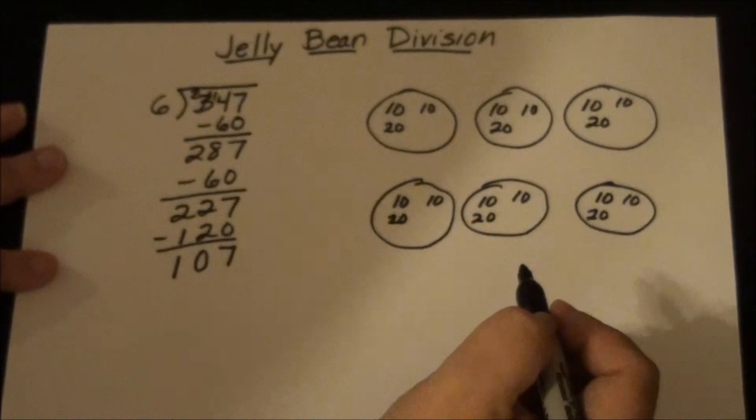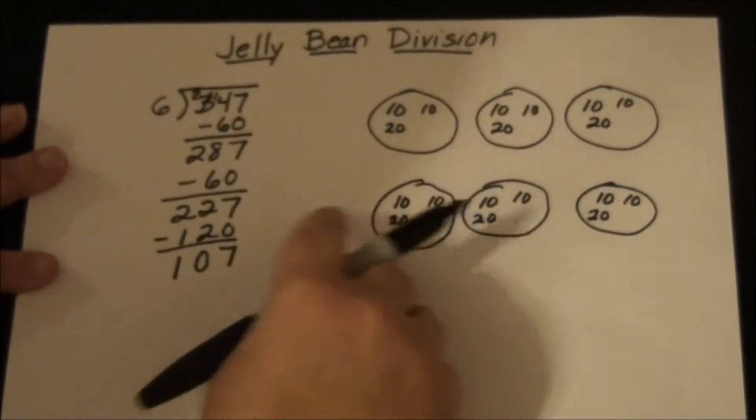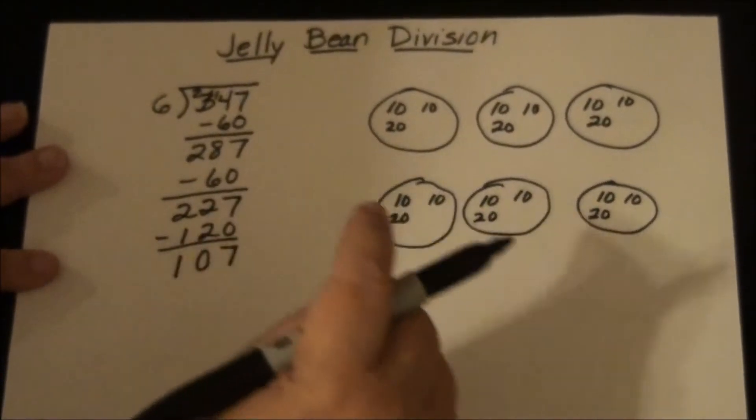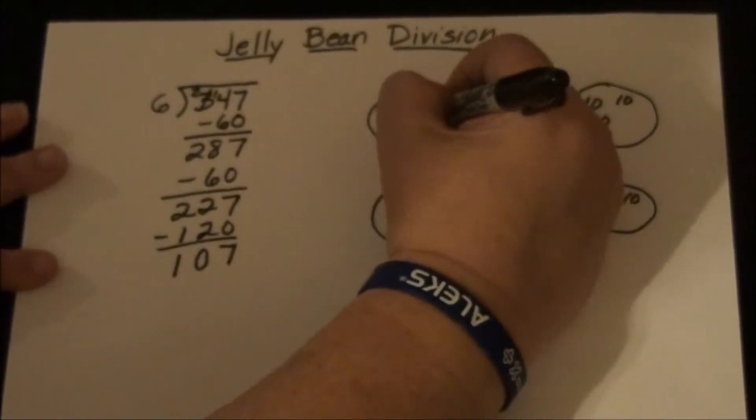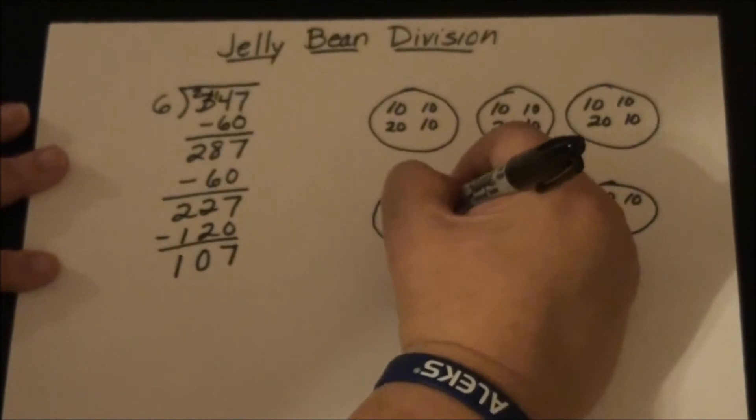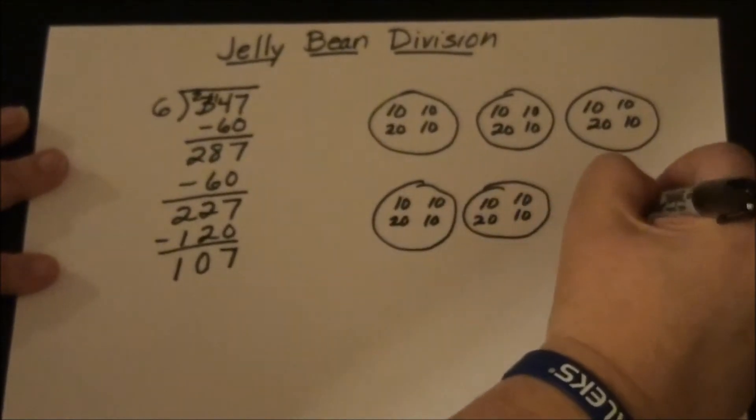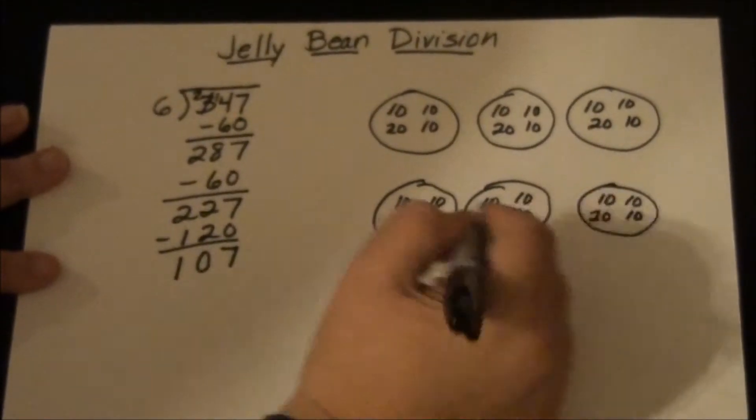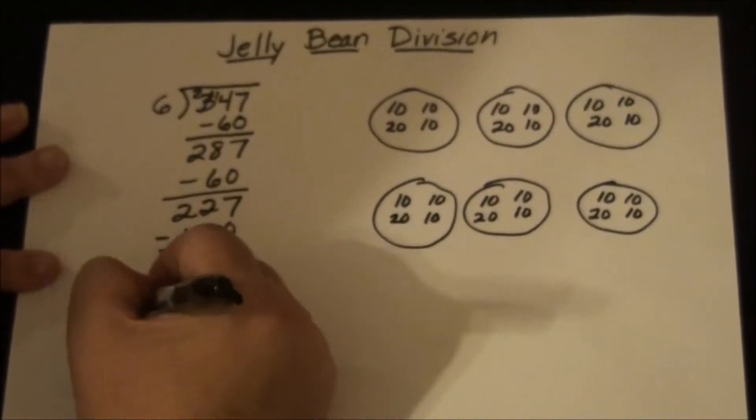So now I know I can't do 20 again because that'll be too much because the other one equaled 120. So I'm going to go back to 10 again. And I know from before that that was 60, so I'm going to subtract 60.